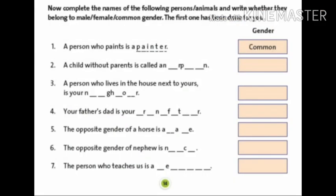Now next exercise of page 14. Complete the names of the following persons, animals, and write whether they belong to male, female, or common gender. First sentence is, a person who paints is a painter, and the gender is common gender. Second, a child without parents is called an orphan, and the gender is common gender.